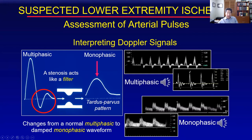The multiphasic flow tends to have multiple components in each cardiac cycle, whereas the monophasic flow pattern seems to almost continue from one cycle to the other.